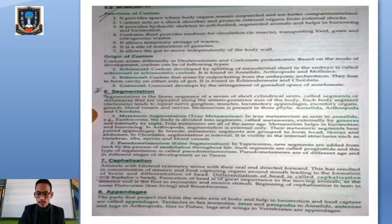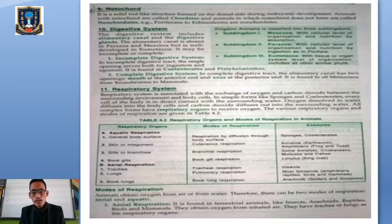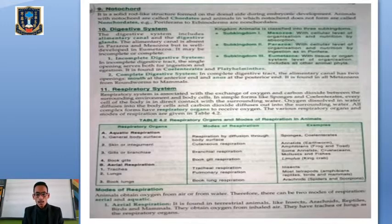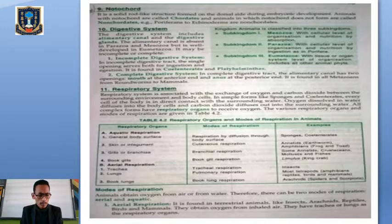The next important basis is the notochord — solid, rod-like structures present on the dorsal side during embryonic development. Animals that possess a notochord are called chordates, and those that do not are called non-chordates. Even humans possess a notochord during embryonic development, but it is later replaced by the vertebral column.